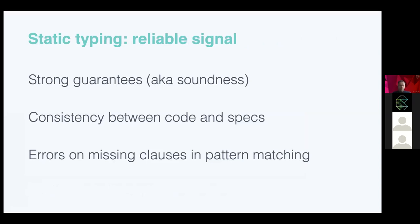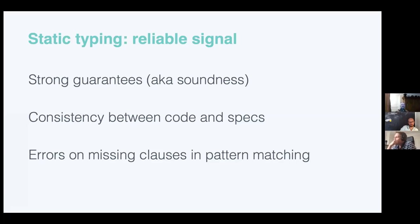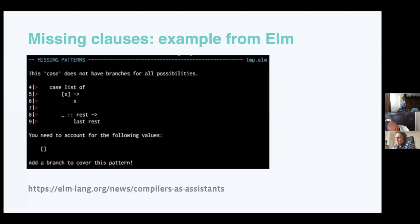The second key aspect is giving you a reliable signal — one you can trust. If the type checker returns no errors, you won't get them at runtime. The type checker also treats specs as contracts, unlike Dialyzer, which sometimes leads to non-intuitive behavior. A type checker also reminds you when you forget to handle certain patterns in case expressions. Here's another Elm example showing an error on a missing empty list pattern, with a clear, human-readable message and extra context. This is the type of experience we are targeting.